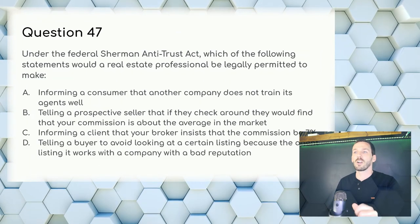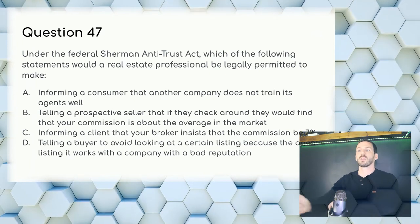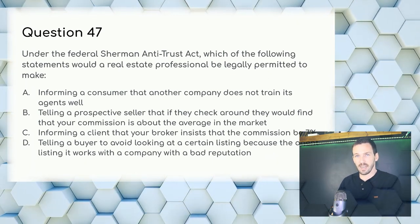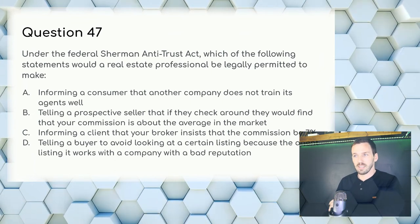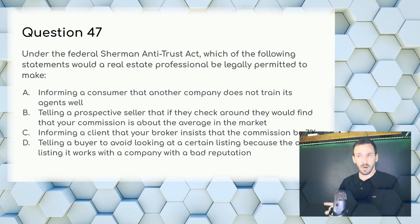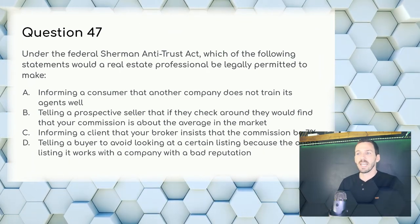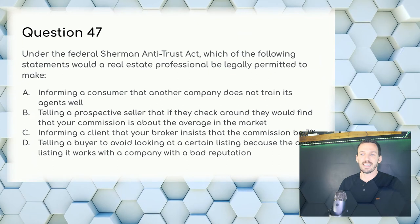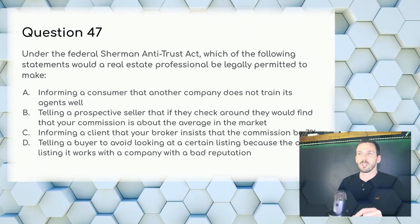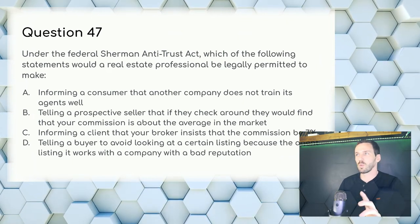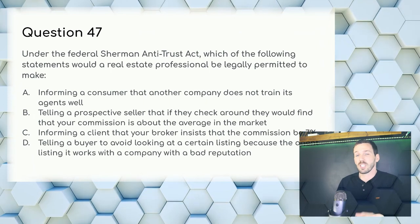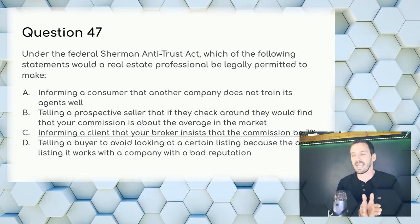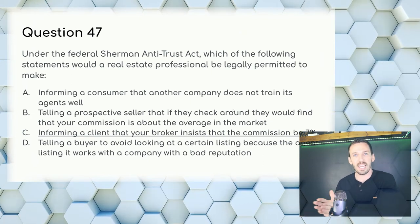Question 47: Under the Federal Sherman Antitrust Act, which statement would a real estate professional be legally permitted to make? Sherman Antitrust says we can't use general terms when referring to commissions due to price fixing. We could tell a client our commission is 7% because we can negotiate what we want to get paid, but we can't say that another firm or the market usually charges a certain rate. Answer: C — informing a client that your broker insists the commission be 7%.